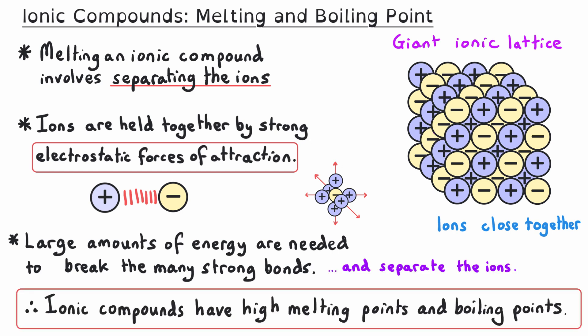As a result of this, ionic compounds have high melting points and high boiling points. They only change from a solid to a liquid at a high temperature, and from a liquid to a gas at an even higher temperature.